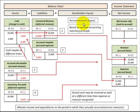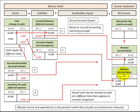To summarize: using accrual accounting, we have four basic account types — either assets or liabilities on the balance sheet. Revenue is derived from either unearned or deferred revenue, which is a liability, or from accounts receivable, which is accrued revenue and an asset. Expenses are derived from either accounts payable or accrued expense, which is a liability, or from inventory or prepaid expense, which is a deferred expense and an asset.